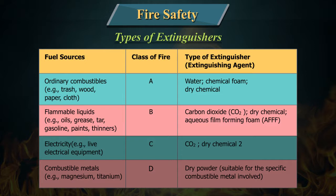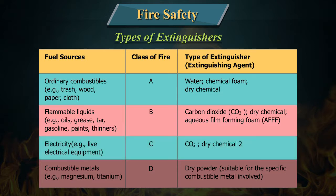The type of extinguisher for Class B fires: carbon dioxide (CO2), dry chemical, aqueous film-forming foam. Fuel source — electricity, example: live electrical equipment.